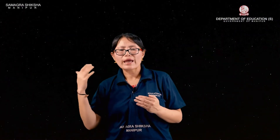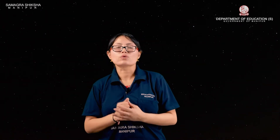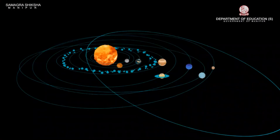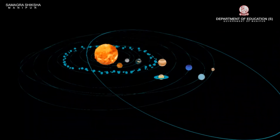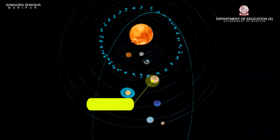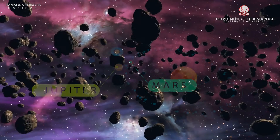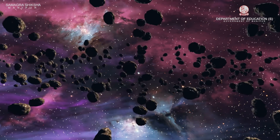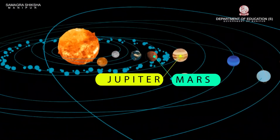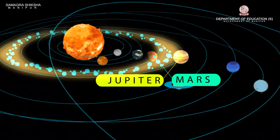Now let's see who else are the members of the solar system after the sun and the planets. What are asteroids? The sun is at the center, and planets revolve around it in their own orbits. Between Mars and Jupiter, there is a gap. Asteroids are large numbers of small objects filling the gap between Mars and Jupiter.